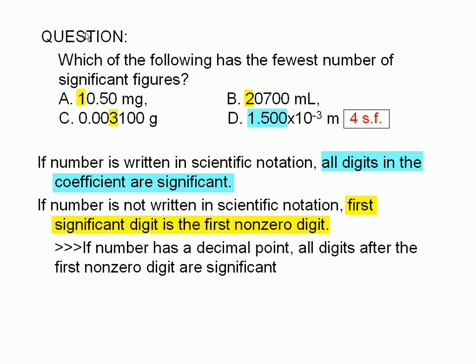Now, if the number has a decimal point, as in choices A and C, then all digits to the right of the first significant digit are also significant. So in choice A, the numbers 0, 5, and 0 are also significant. Choice A has four significant figures.